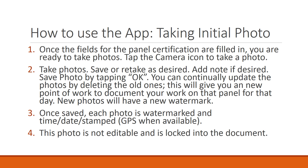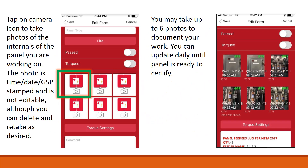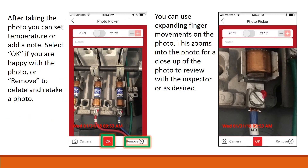Click on the camera icon to take photos of the internals of the panel you are working on. The photo is time-date-GPS stamped and is not editable, although you can delete and retake as desired. You may take up to 6 photos to document your work. You can update daily until the panel is ready to certify. After taking the photo, you can set temperature or add a note. Select OK if you are happy with the photo, or remove to delete and retake. You can use expanding finger movements on the photo to zoom in for a close-up to review with the inspector.